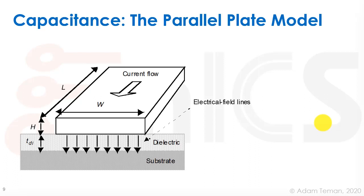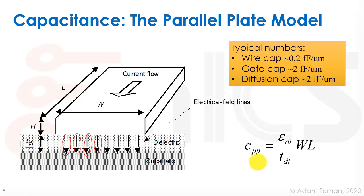Let's go into how we model the real capacitive parasitics of the interconnect, starting with the traditional parallel plate model. The parallel plate model looks at a piece of metal that is much wider than the distance to the other plate. We have the substrate and a metal or poly layer running on top of it. If the distance TDI is much smaller than the width W, then we can say it's an infinite parallel plate, and the capacitance is just the field lines from the plate area. The parallel plate capacitance is C = ε / d × (W × L), where ε is the dielectric permittivity, d is the distance between plates, and W×L is the surface area.